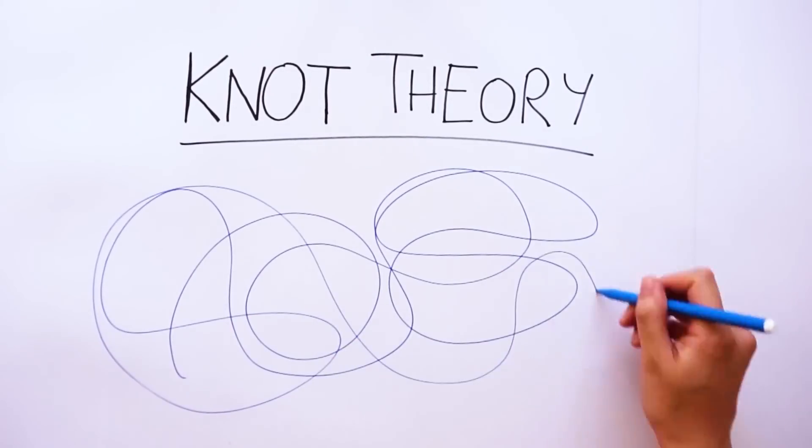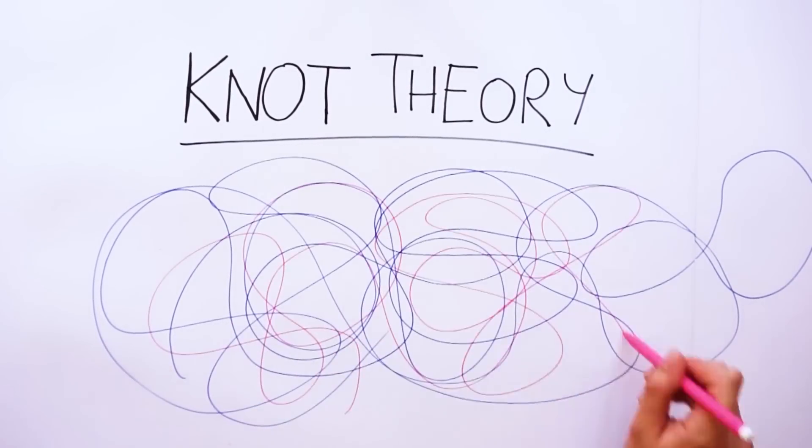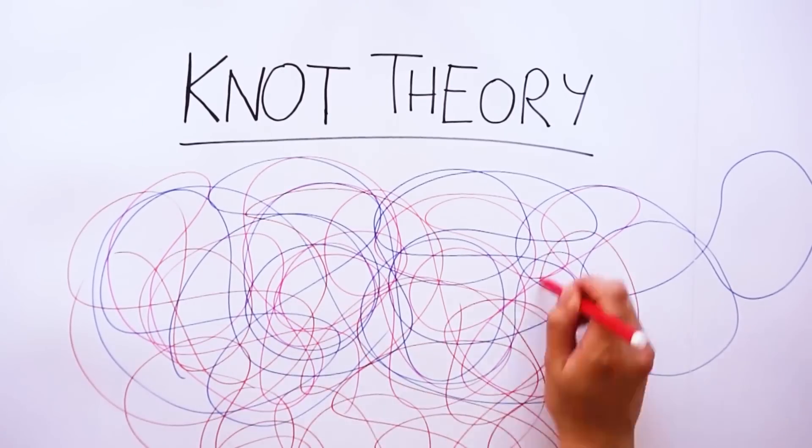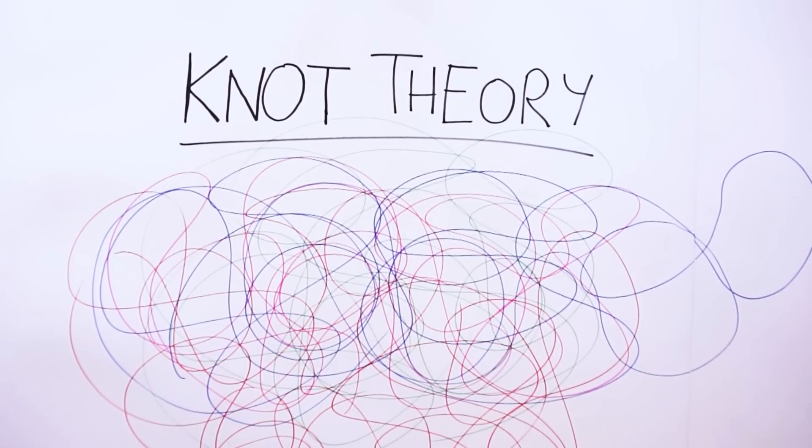Knot theory is the mathematical study of tangled systems. As this is a problem about tangling things together, chances are knot theory will come in handy. With puzzles like these, it's sometimes hard to know where to even begin. A common technique mathematicians use is to strip away everything but the most important features.